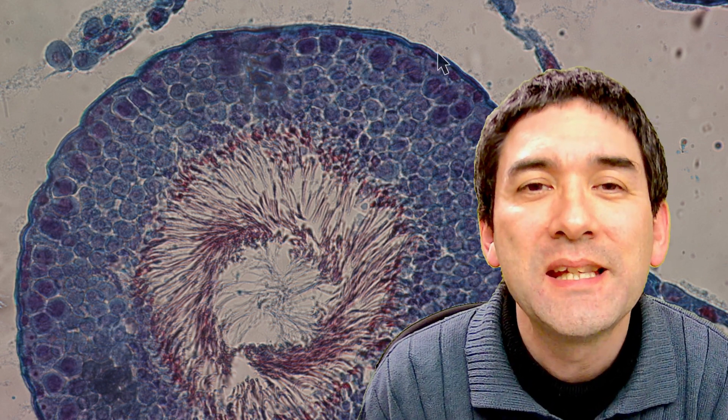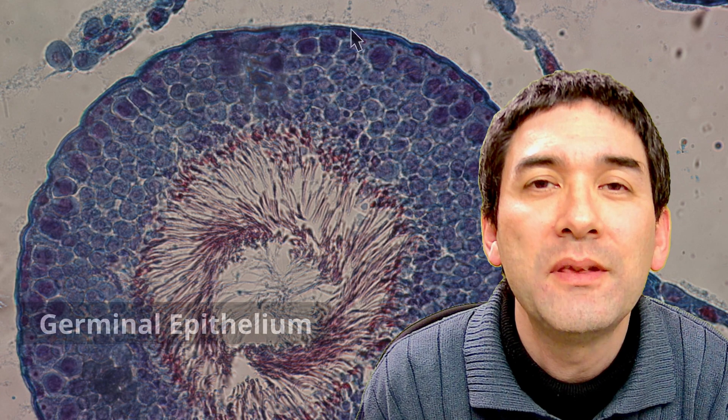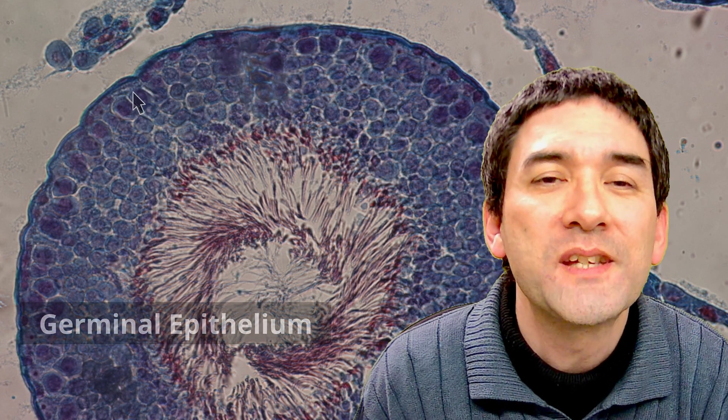And this layer outside here is referred to as the basement membrane, and it kind of holds the whole seminiferous tubule together. There are also some layers right beneath the basement membrane, and these are called germinal epithelium cells. Those germinal epithelium cells are supportive cells.